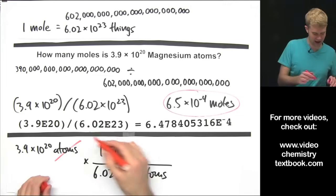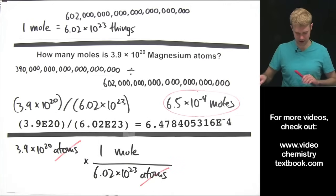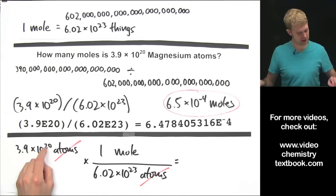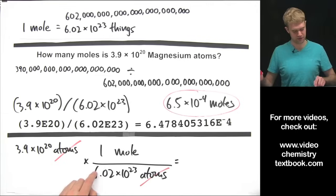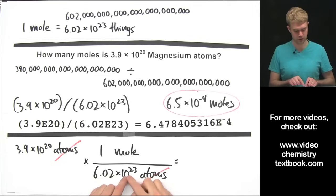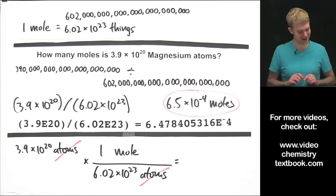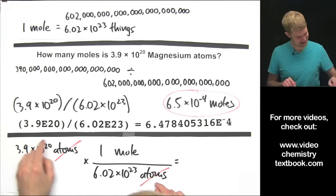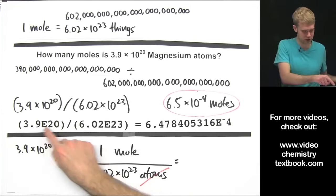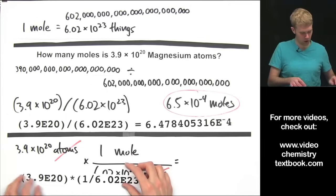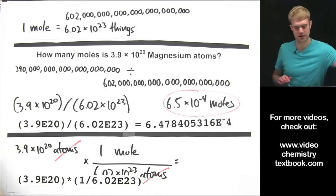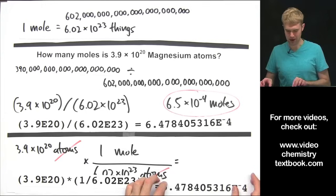The atoms cancel out, atoms on top, atoms on the bottom, and the math that we do is 3.9 times 10 to the 20th times 1 divided by 6.02 times 10 to the 23rd. This 1 doesn't really make much of a difference, all we're really doing is this divided by this, which is the math that I did up here, or you can type this into your calculator like this and get the same answer.